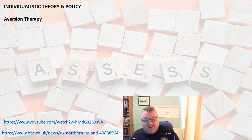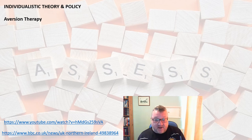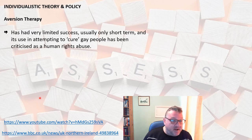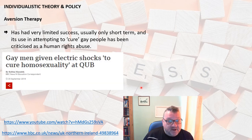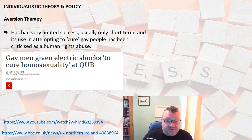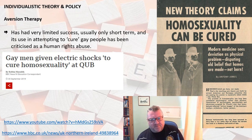Aversion therapy has had limited success — it's usually only short term and it's been abused. In some countries it's been used to try to cure gay people, which is definitely a human rights abuse. For example, gay men were given electric shocks to cure homosexuality at Queen's University Belfast, and it has also been used in China to try to cure homosexuality. Everything that comes in is open to abuse. So it's been used for treatment of sex offenders and alcohol addiction, but also abused for treatment of homosexuality.